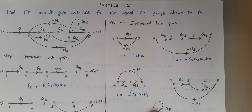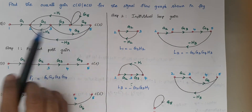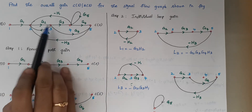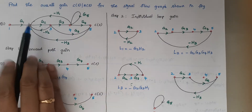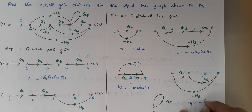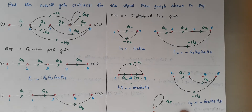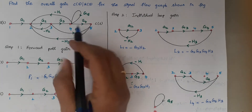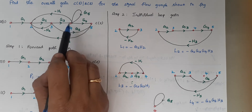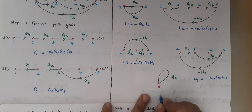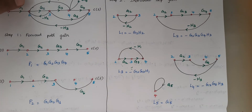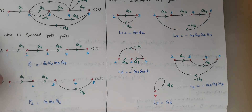The next loop covers nodes 2, 3, and 5: from 2 to 3, 3 to 5, and back to 2. This is loop 4, and its gain L4 = −G2G6H3. The last loop is at node 4 alone — it starts and ends at node 4 — a simple self-loop with gain G5. With that, step 2 is complete.